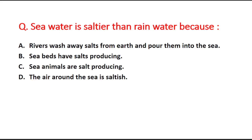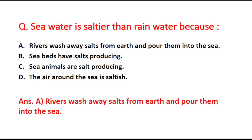Next question: Sea water is saltier than rain water because — option A is rivers wash away salts from the earth and pour them into the sea, B is sea beds have salt-producing properties, C is sea animals are salt producing, and D is the air around the sea is saltish. The reason is that rivers wash away salts from the earth and pour them into the sea, so sea water is saltier than rain water.